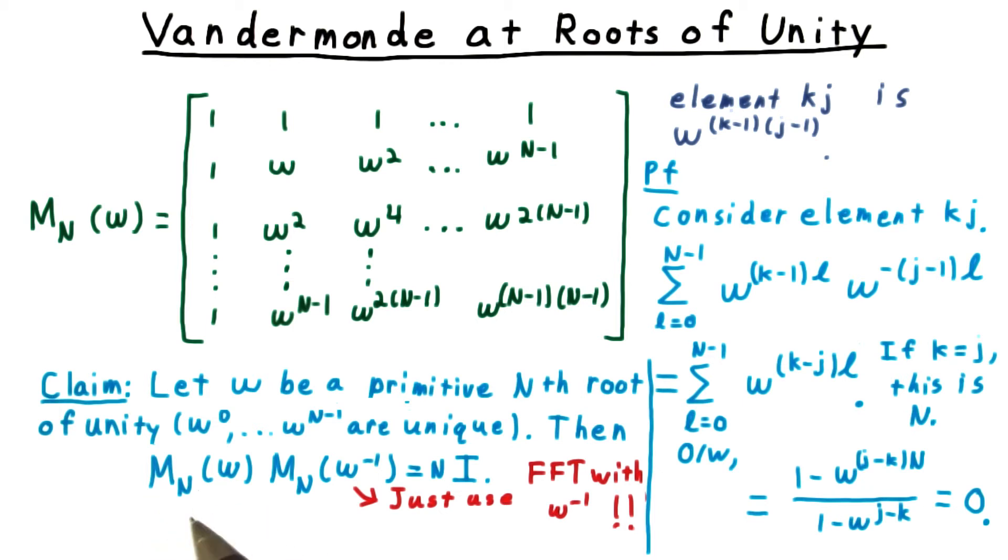And we used the fast Fourier transform to do that. Now we see that we can multiply these values by essentially the inverse of this matrix, also using the fast Fourier transform. And this will allow us to recover the coefficients given values. This is why it was so key that the fast Fourier transform work with any root of unity.